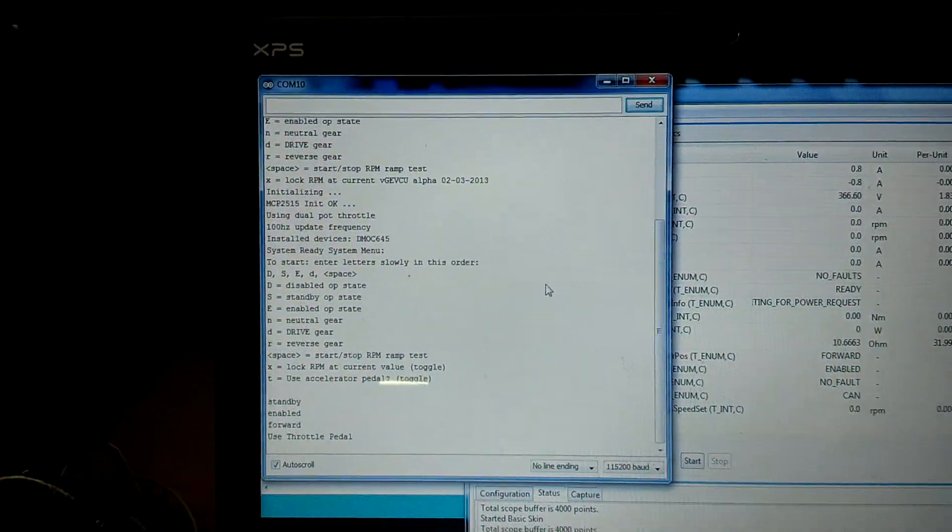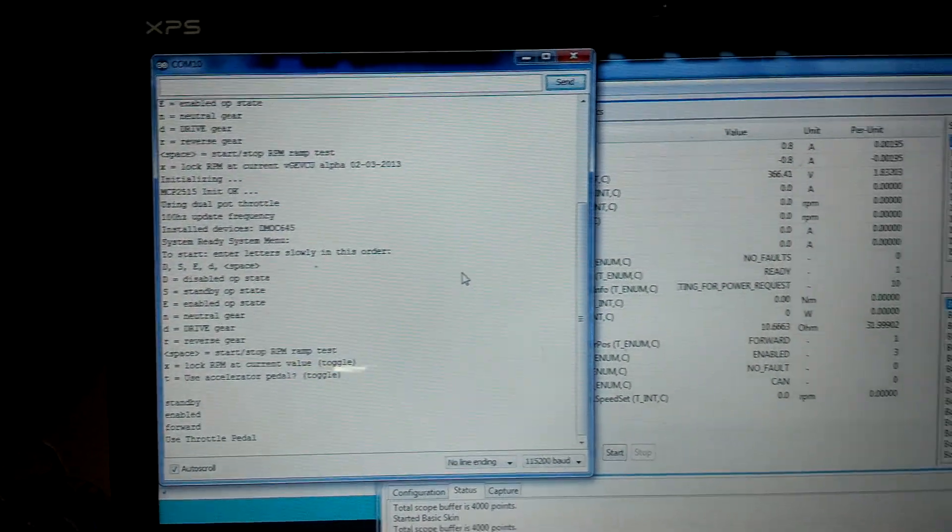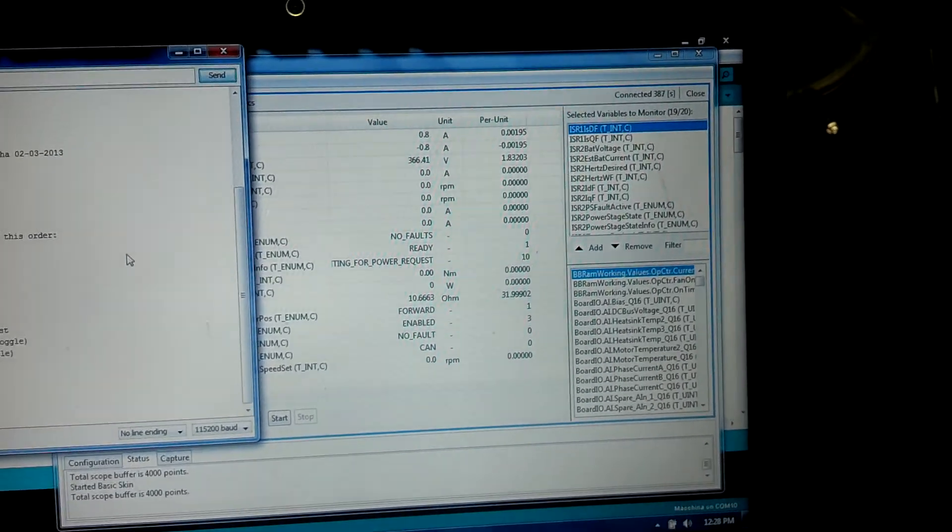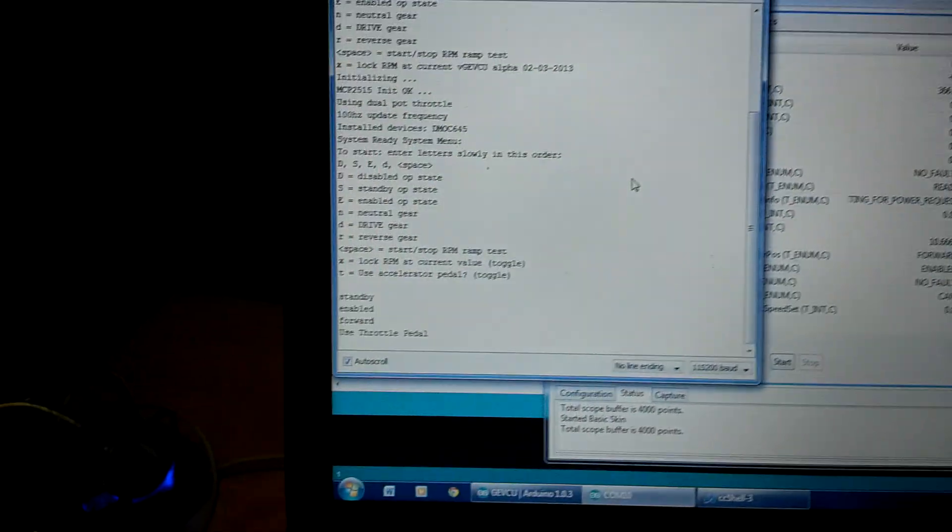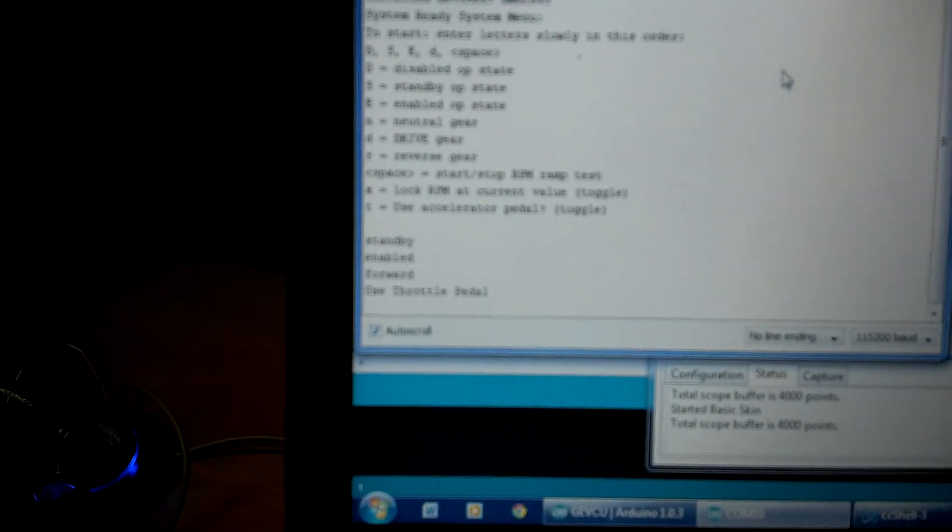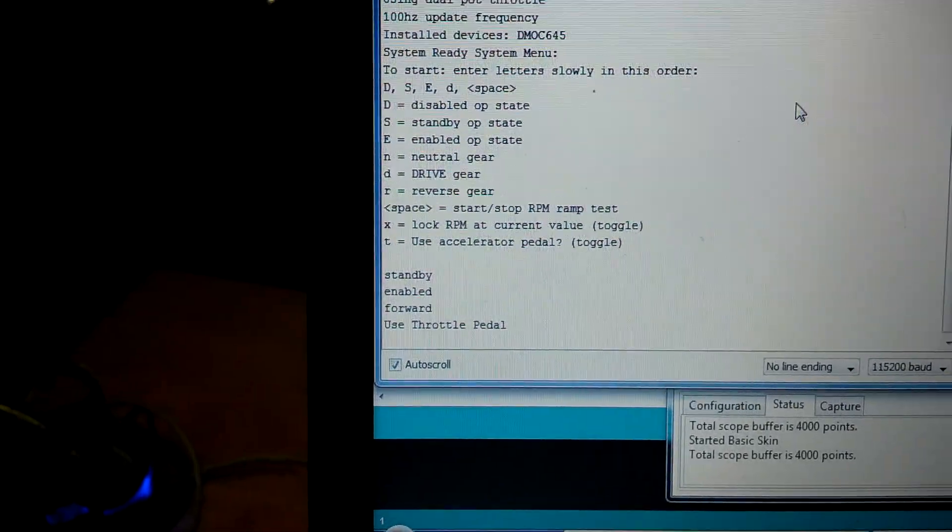So this is the serial monitor of the Arduino IDE and CC shell over here. You can see at the bottom, I've already done standby enable forward.